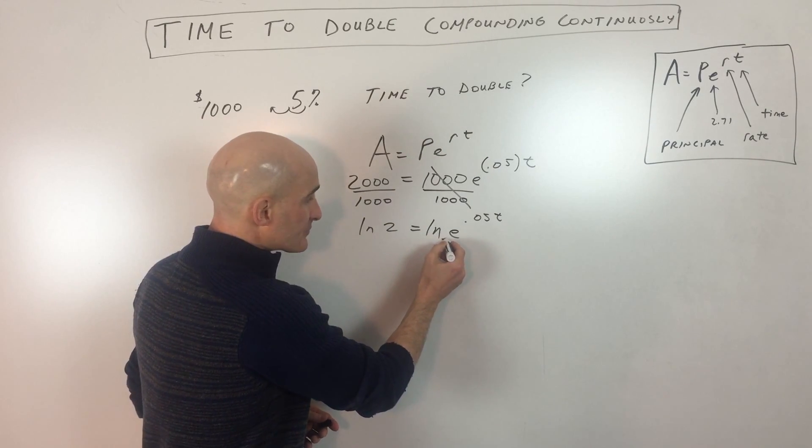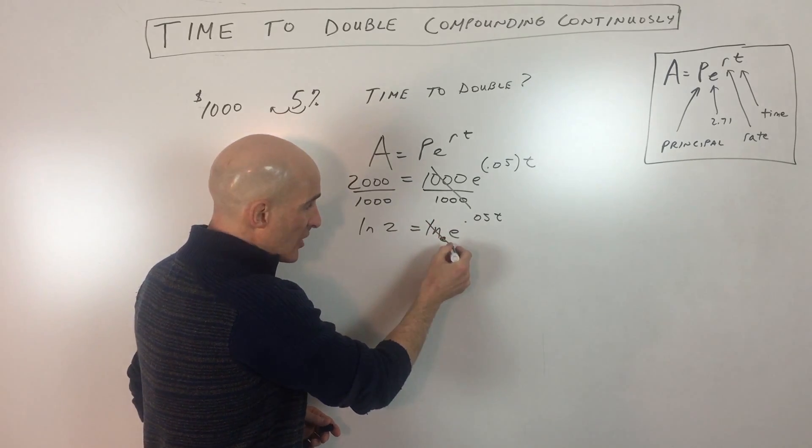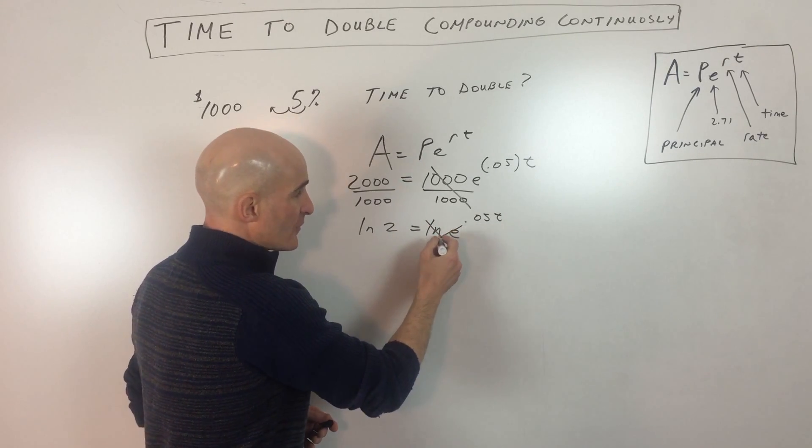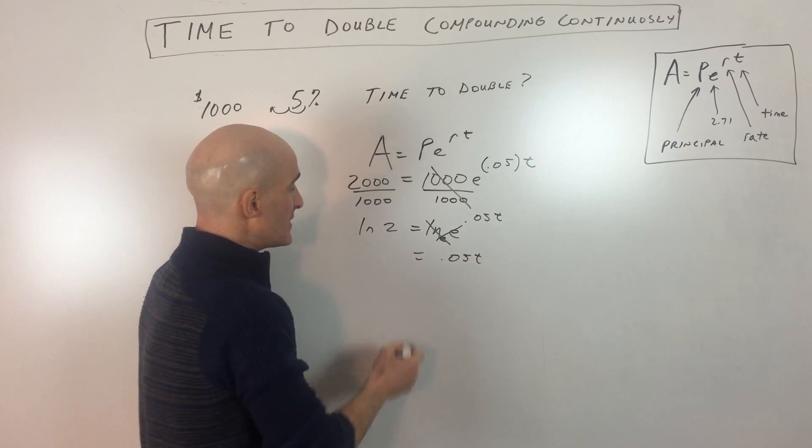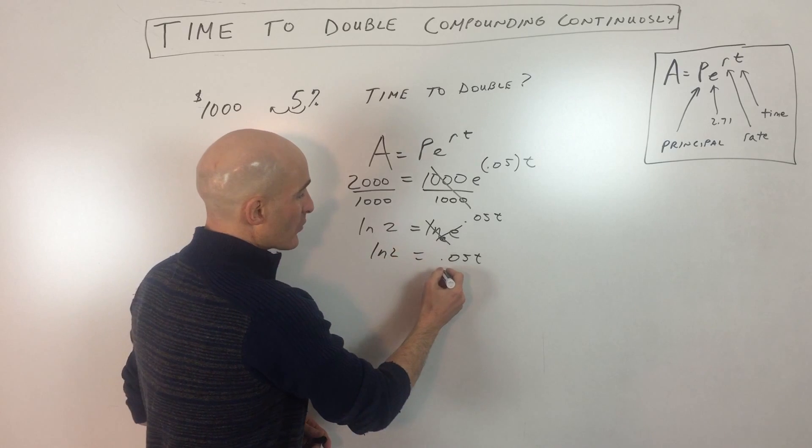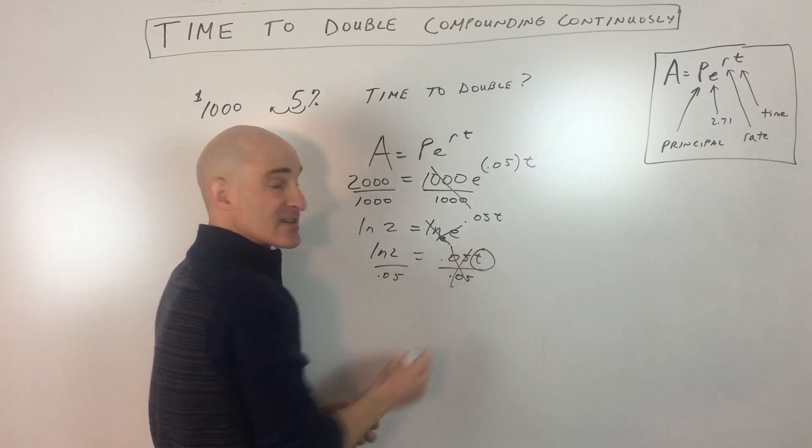Natural log, the ln here, you don't see it, but it's understood to be base E. So the natural log base E and this exponential function base E, they're undoing one another. You get 0.05 T equals natural log of 2. And we're going to divide both sides by 0.05 now to get the time by itself.